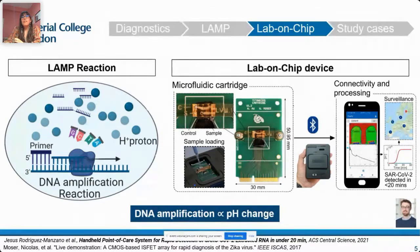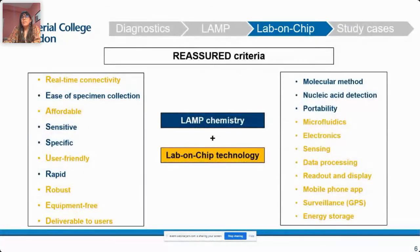The result is a sigmoidal signal similar to that obtained with fluorescence-based instruments when the target is detected. Combining LAMP with lab-on-chip technology aims to meet the REASSURED criteria from the WHO, including molecular nucleic acid detection, portability, microfluidics, cloud connectivity, and reliability.